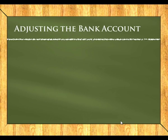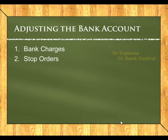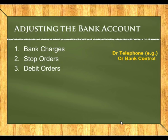How do we adjust our bank account? For bank charges, you would debit bank charges — the expense account — and credit the bank account. The folio will always show BS, which stands for bank statement. For stop orders, we would debit whichever expense it relates to and credit our bank account. So if this was for insurance, you would debit insurance and credit bank. For debit orders, you would debit the expense and credit the bank account — so if the expense was for telephone, you would debit telephone and credit bank account.